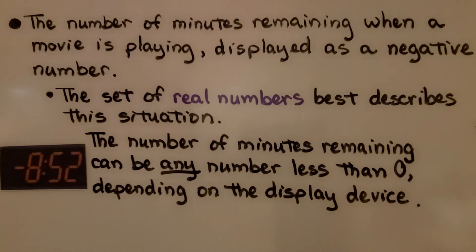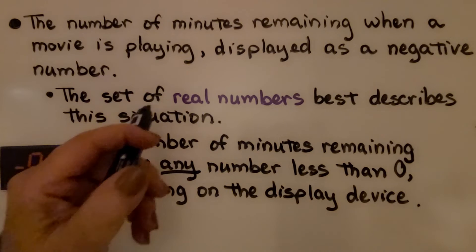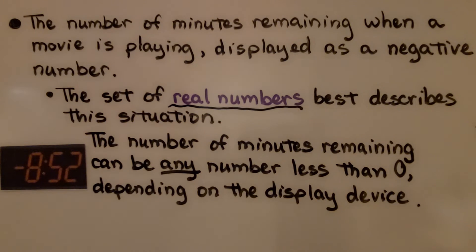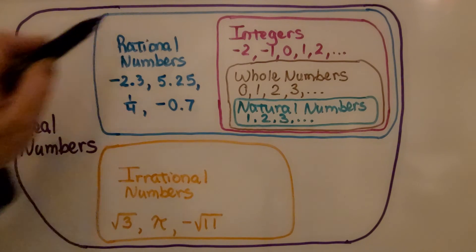The number of minutes remaining when a movie is playing displayed as a negative number. That would be the set of real numbers. The set of real numbers best describes this situation. The number of minutes remaining can be any number less than zero depending on the display device. So it counts down until the end of the movie, or it could be to the end of a song, or how many minutes until a podcast is about to start.